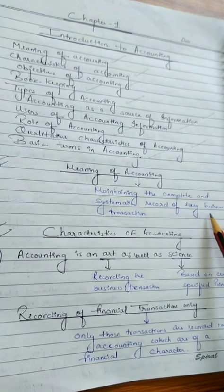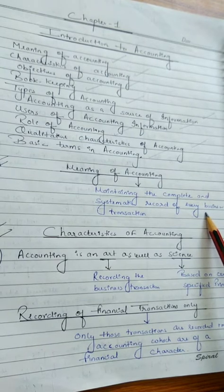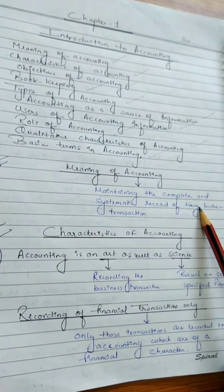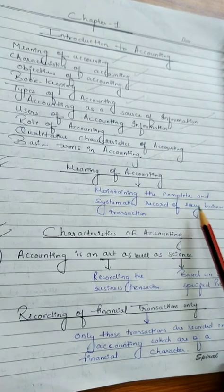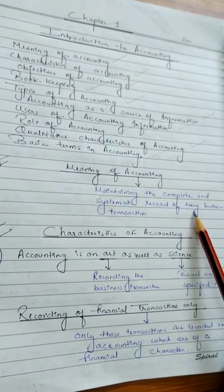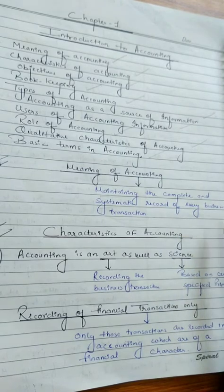For example, when we visit a shop and purchase any item and pay money to the shopkeeper, the shopkeeper maintains a record of that transaction so that at the end of the year he can ascertain the profit and loss of the business. Today, every business organization, no matter small or big, has to maintain records of business transactions. Accounting is necessary in all types of organizations irrespective of their nature and size.